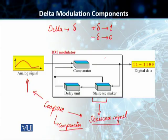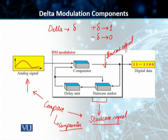If the next bit is 1, the staircase maker moves the last point of the staircase signal — the delta — up. If the next bit is 0, it moves the delta down. The delay unit is there to hold the staircase function for the period between the two comparisons.